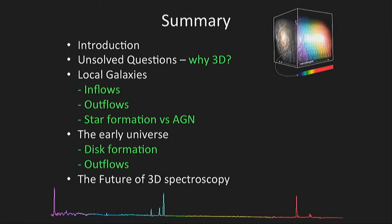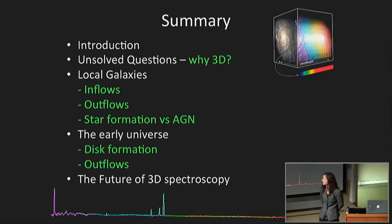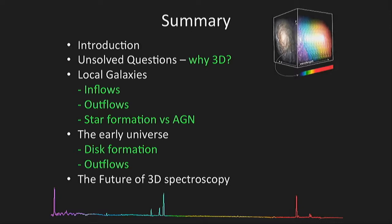Just a summary of my talk today. First, I'll give a quick introduction as to why I'm studying galaxies in 3D and unsolved questions in the field, and what we can do with integral field spectroscopy to solve these questions. Then I'm going to show some recent highlights from a large survey called SAMI, which is an instrument on the Anglo-Australian Telescope. We can study inflows, outflows, and dissect galaxies into different power sources — star formation versus AGN or shocks from outflows. In the later part I'll talk about the early universe using Keck adaptive optics and near-infrared integral field spectroscopy.